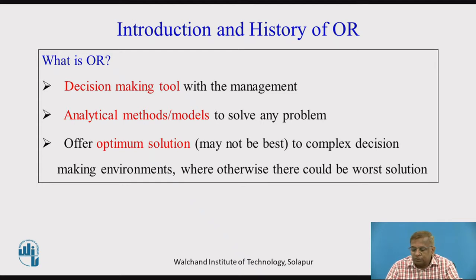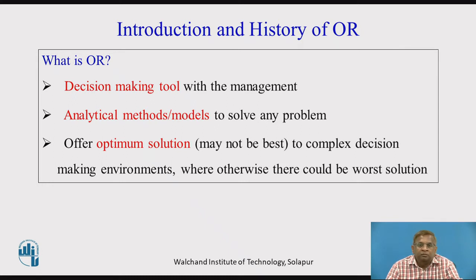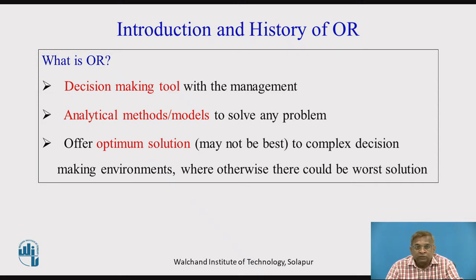In that sense, OR offers some solution, and depending upon the situation, we may aim at maximizing some parameters or minimizing some parameters. For example, if we are dealing with profit, revenue, or income types of situations, we may intend to maximize that. Conversely, if it is cost, distance, or time, then we may have our objective function aimed at minimizing the final solution.